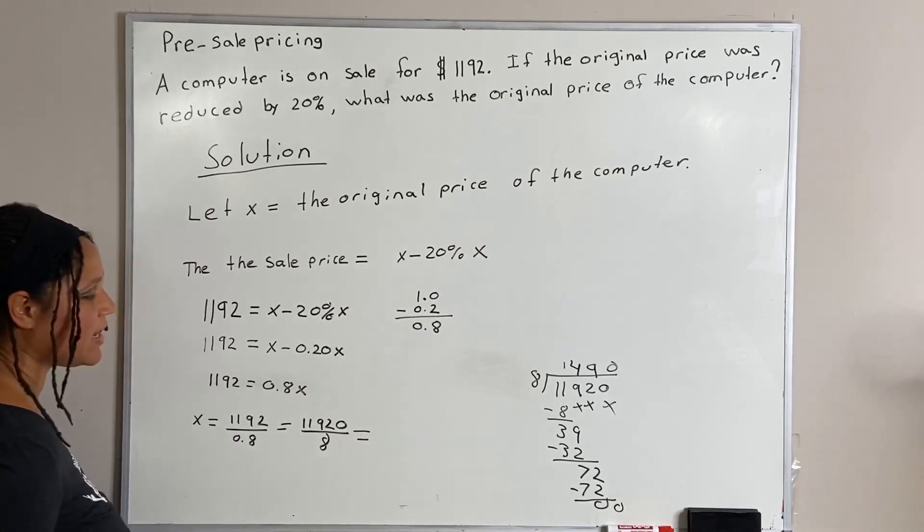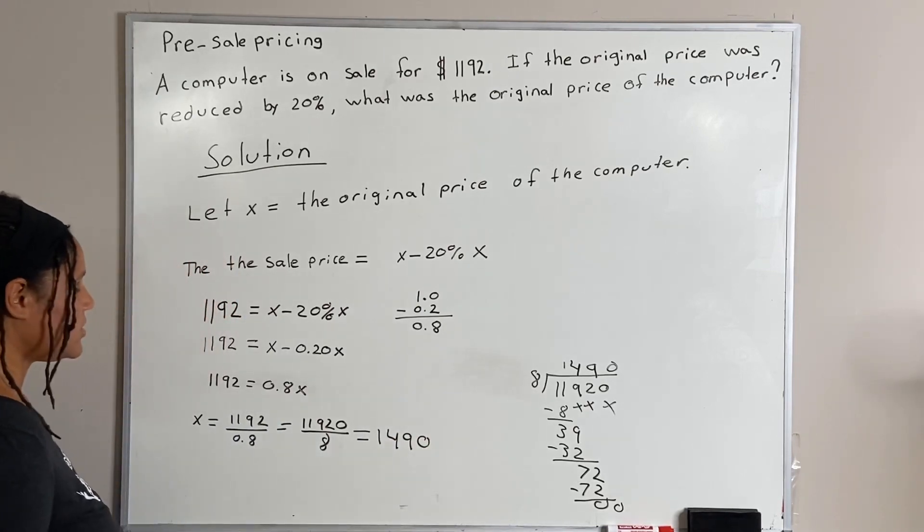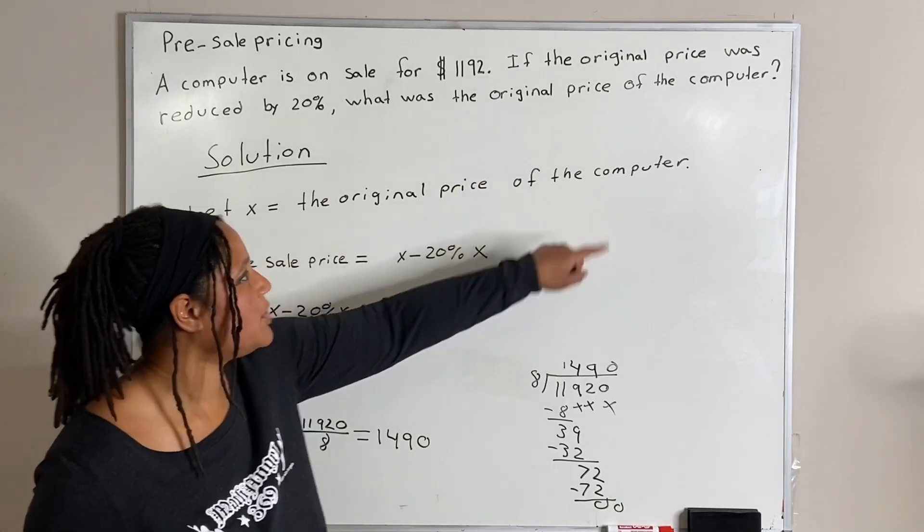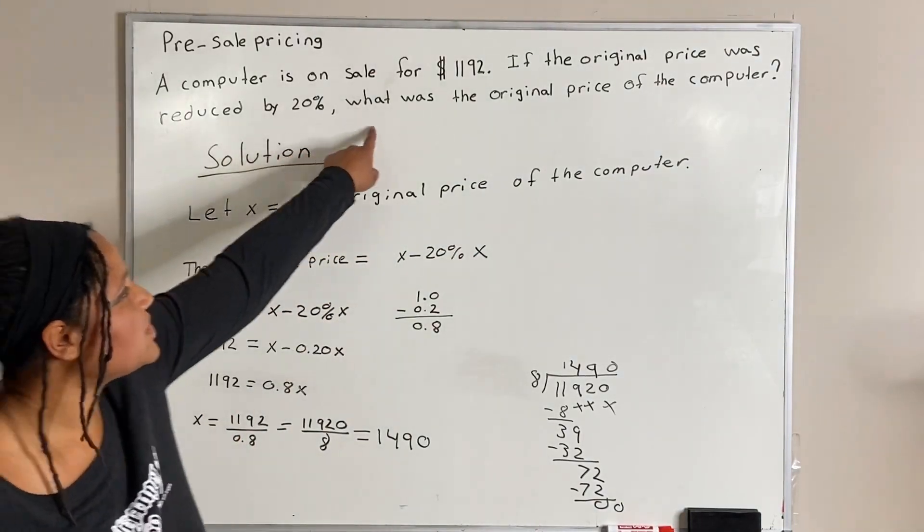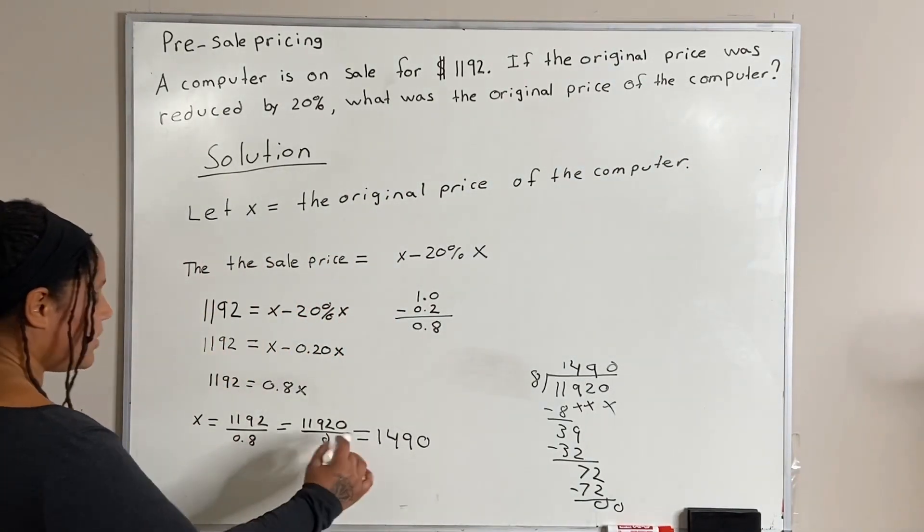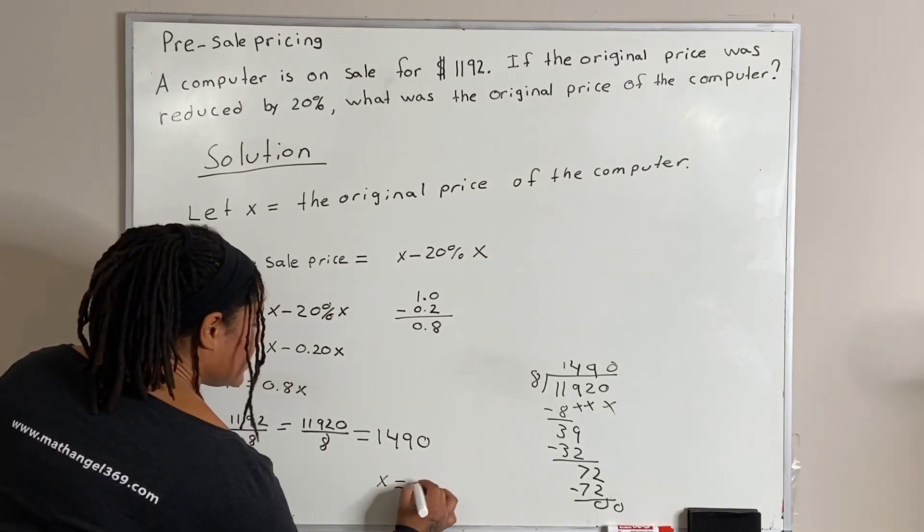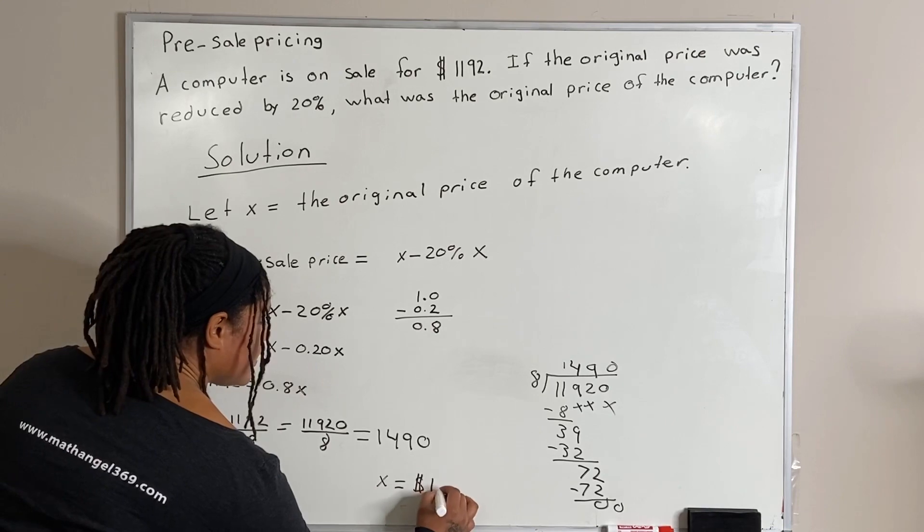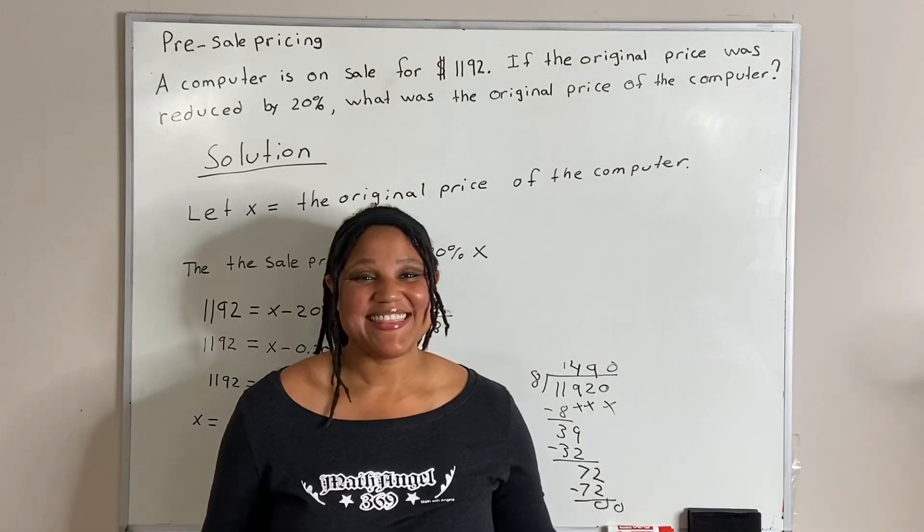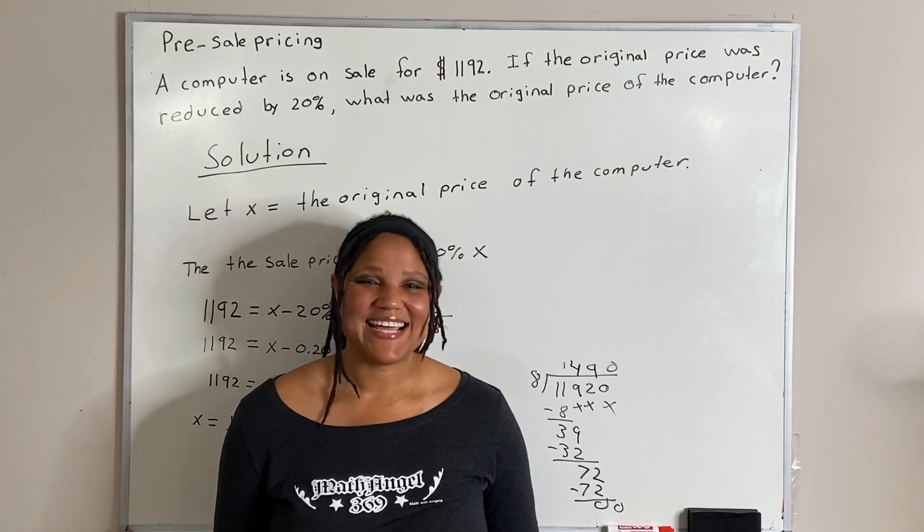So, then our final answer is 1,490. So, now we said that x is equal to the original price of the computer. And our question wants to know what is the original price of the computer, right? So, the original price of the computer is x is equal to $1,490. And that is how you solve this problem using mathematical modeling techniques.